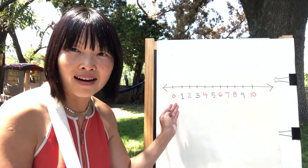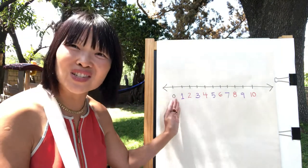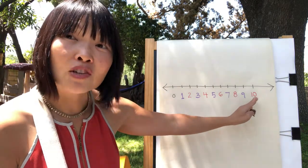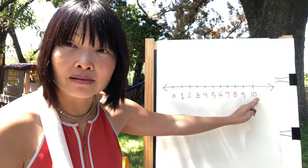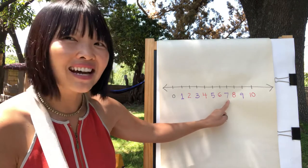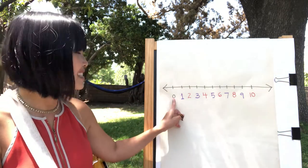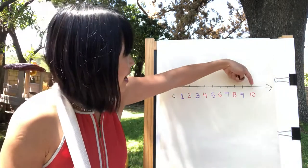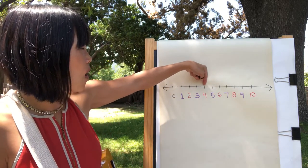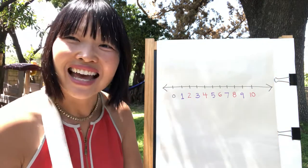So from 10 back to 1 or 0: 10, 9, 8, 7, 6, 5, 4, 3, 2, 1. Now point with me — you ready? Let's go backwards from 10 by ones: 10, 9, 8, 7, 6, 5, 4, 3, 2, 1, 0. Let's do it once more: 10, 9, 8, 7, 6, 5, 4, 3, 2, 1, 0.